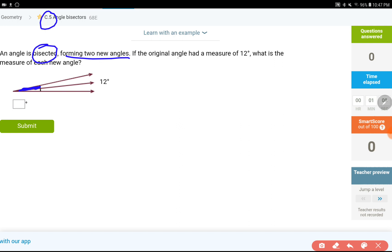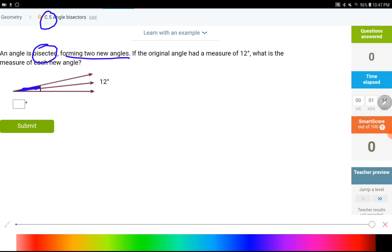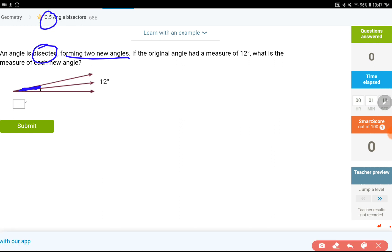If the original angle had a measure of 12 degrees, and remember it is cut by two equal pieces, what is the measure of each new angle? This one would be 6 degrees, that one would be 6 degrees, so each angle would be 6 degrees. Let's see what the next level would look like. I will pause the video right here.